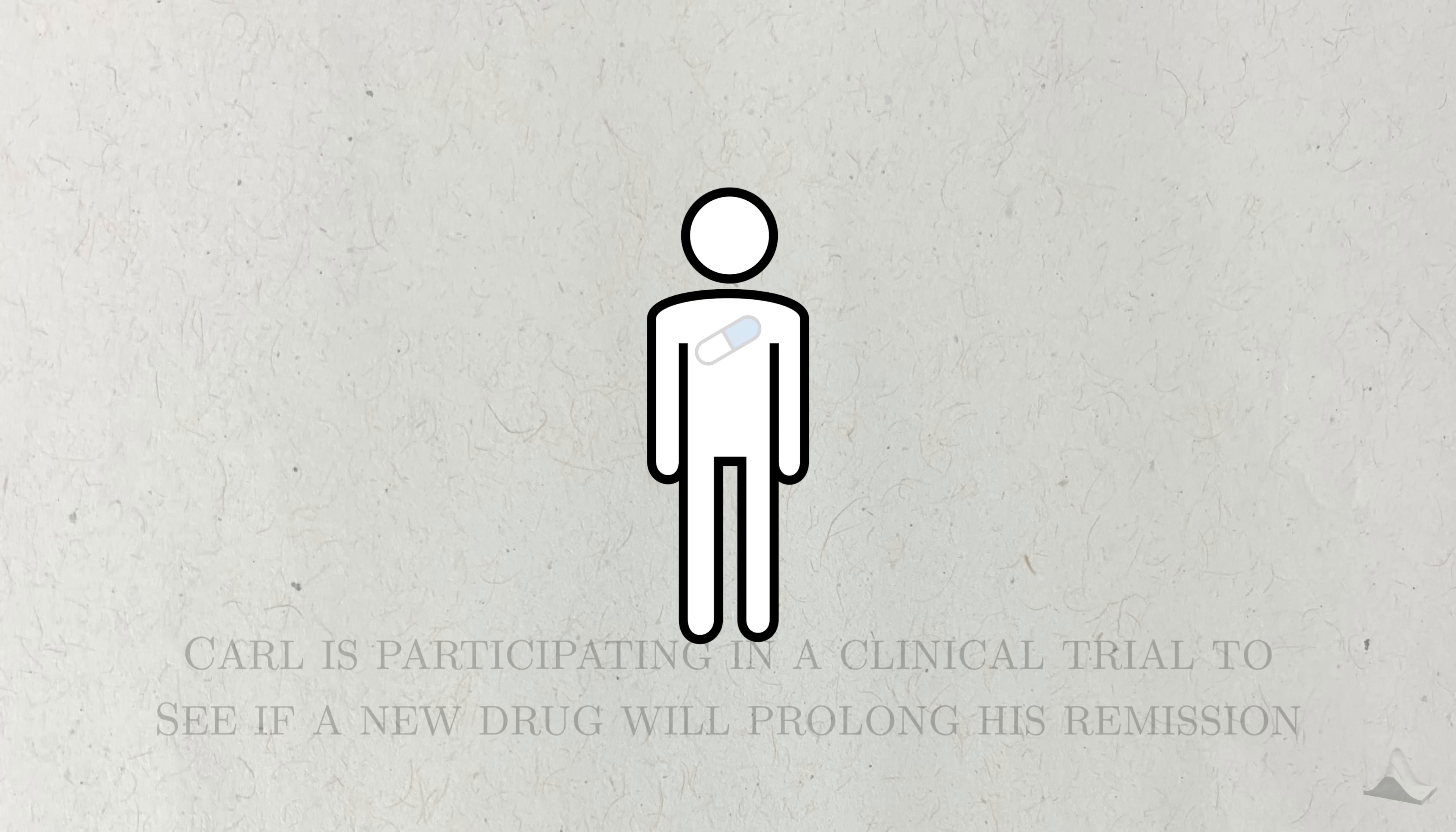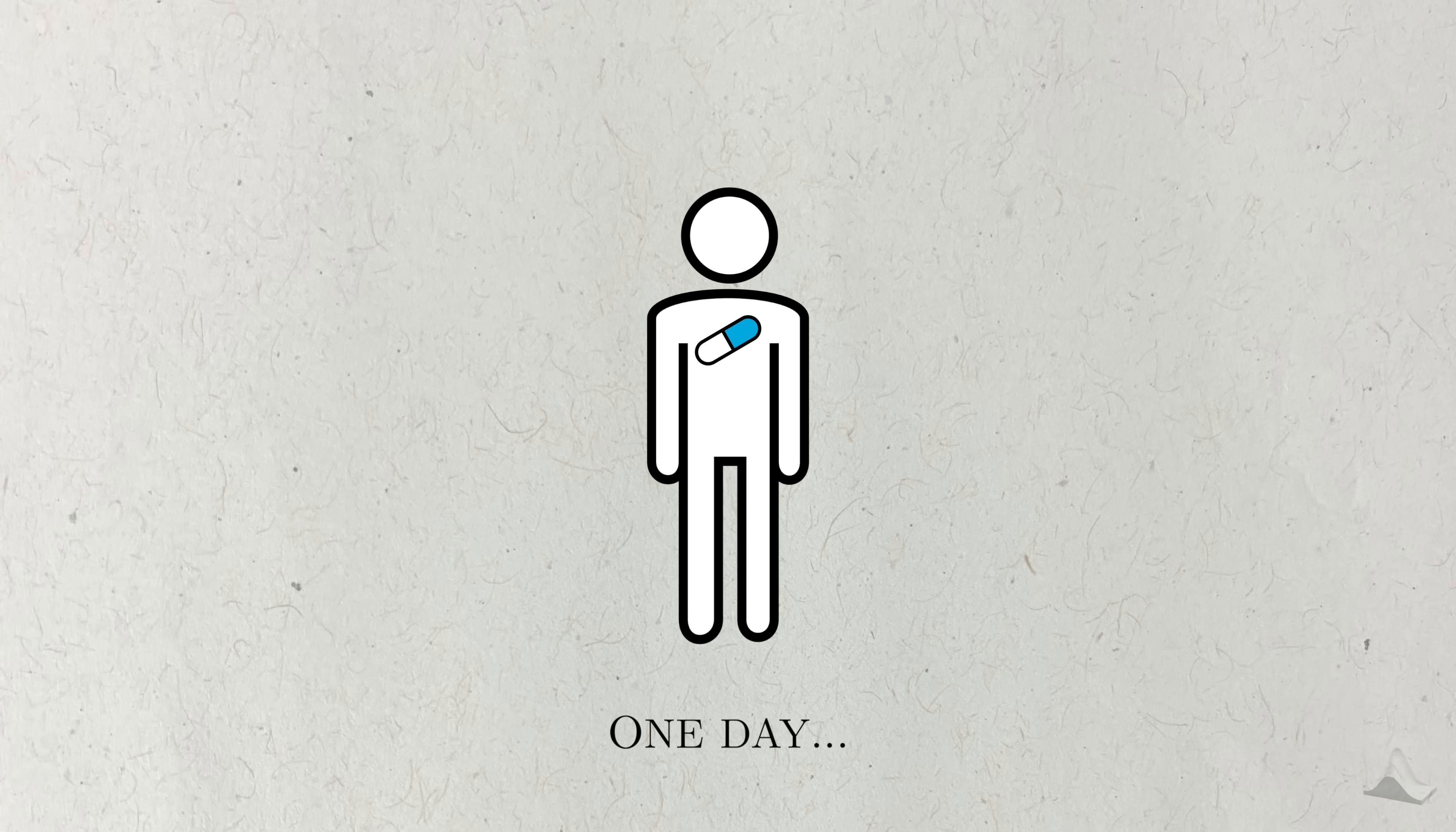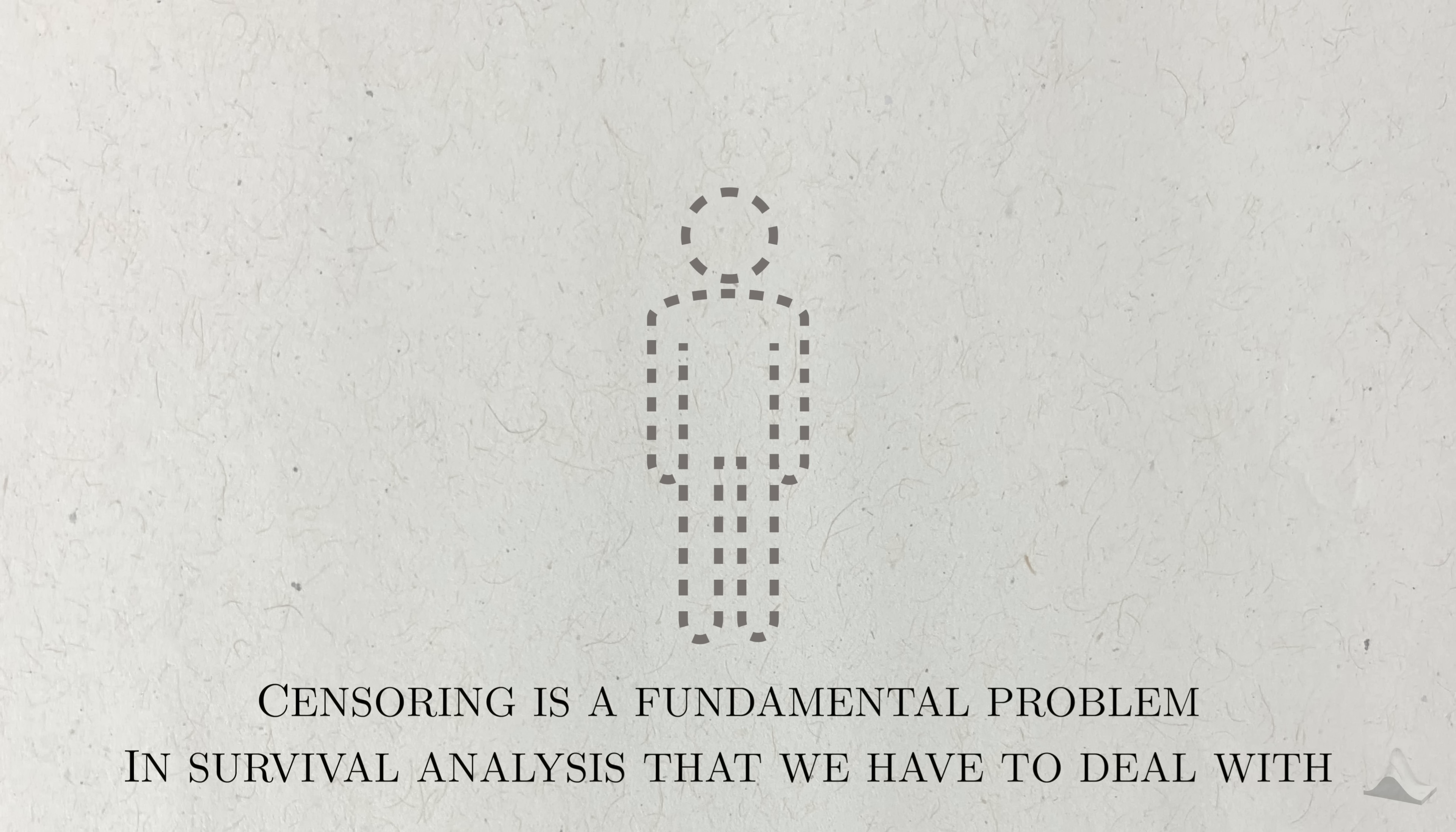Let me demonstrate. This is Carl. Carl is participating in a clinical trial to see if a new drug can extend the amount of time he'll spend in remission. He's been in the trial for two years already, and he's tired of having to come into the lab every two weeks for checkups and blood work. So one day, Carl gets up and decides, 'Screw you guys! I'm going home!' He just leaves the trial. What Carl has done is that he's created a gap in his data. The people running the trial will never know whether or not the event happens to Carl. They say that Carl's event is censored.